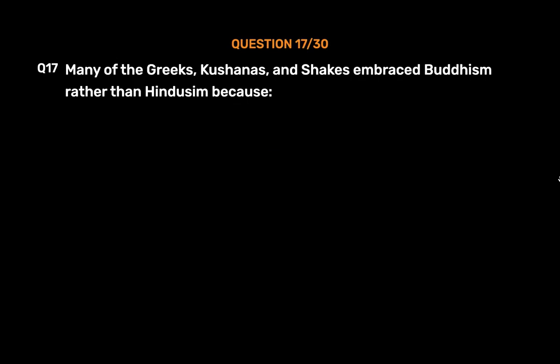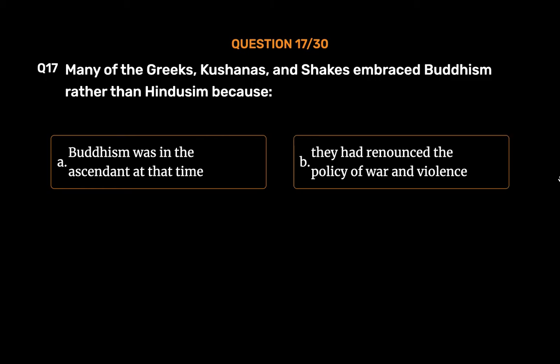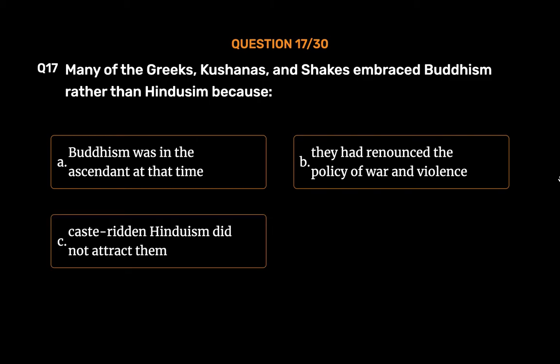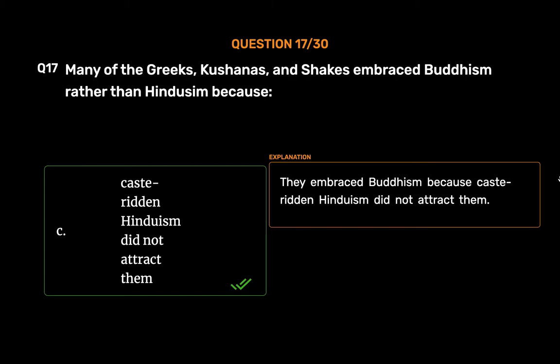Question number seventeen: Many of the Greeks, Kushanas, and Shakas embraced Buddhism rather than Hinduism because — Option A: Buddhism was in the ascendant at that time, Option B: they had renounced the policy of war and violence, Option C: caste-ridden Hinduism did not attract them, Option D: Buddhism provided easier access to Indian society. The correct answer is Option C. They embraced Buddhism because caste-ridden Hinduism did not attract them.